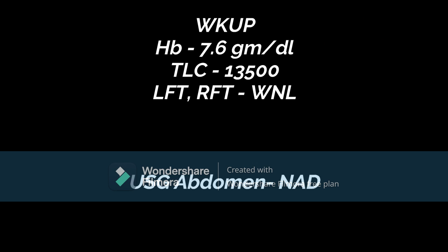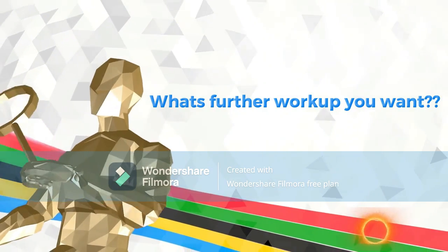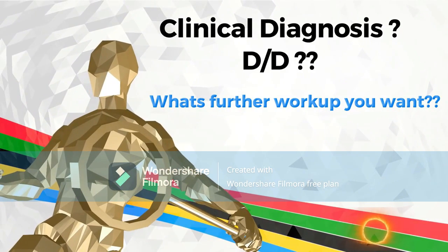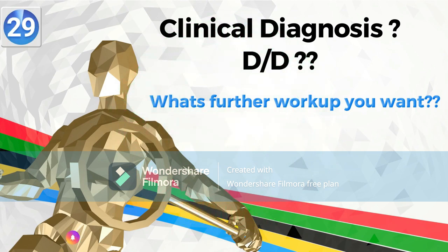Her basic workup showed hemoglobin of 7.6 grams, TLC elevated at 13,500, while liver function tests and electrolytes were normal. Screening ultrasound of the abdomen was normal. Based upon our discussion so far, viewers should consider: what is the clinical diagnosis? What are the differential diagnoses in this case, and what is the further workup required? Please think over it, write it down, and we will discuss this case as the theoretical discussion evolves. Stay tuned.